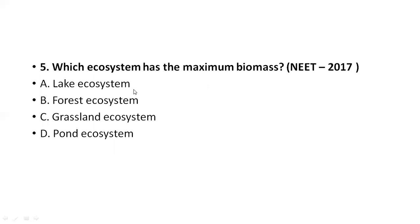Next: which ecosystem has maximum biomass? Maximum biomass is seen in forest ecosystems. Among the options — lake ecosystem, grassland ecosystem, and pond ecosystem — forest ecosystem is the biggest one, and maximum biomass is observed there.